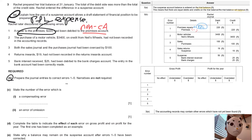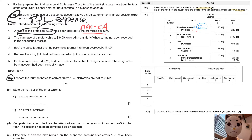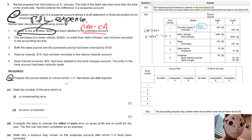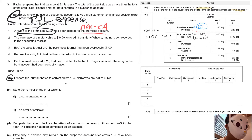For number two, it's about the purchase of a motor vehicle on credit — but it was not recorded in the accounting records. This is an error of omission. We have to put it back: debit motor vehicles because it's a non-current asset increase, and credit the liability since this is a non-current liability.